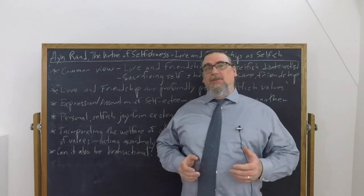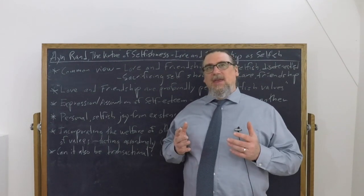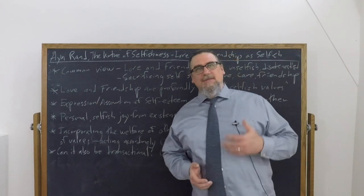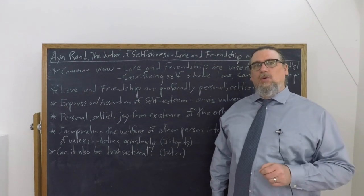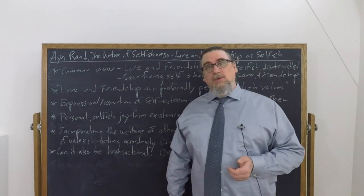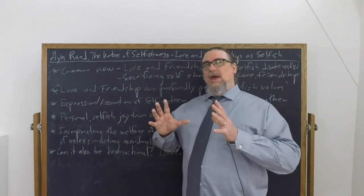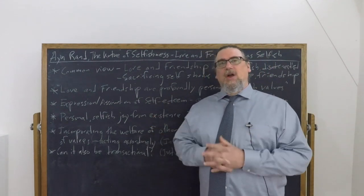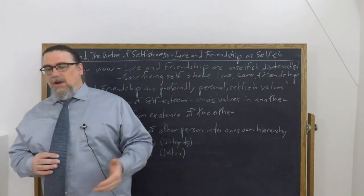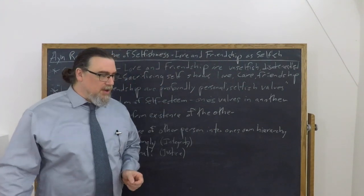One of the common criticisms that gets made against egoist perspectives in moral theory is that they can't take into account love and friendship and the values that these ought to hold for us as human beings. Ayn Rand considers this in chapter three of her work, The Virtue of Selfishness, which is about the ethics of emergencies.